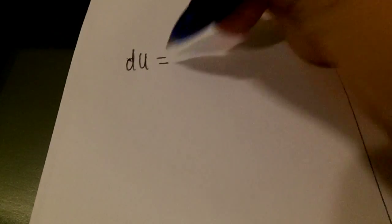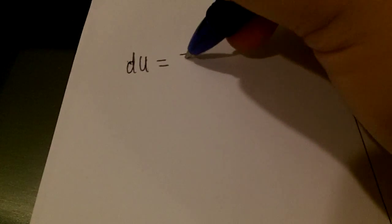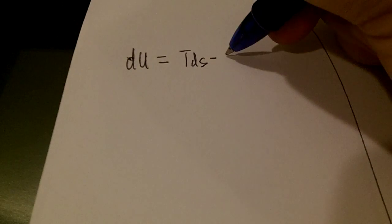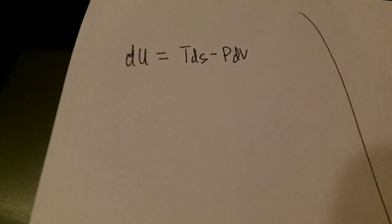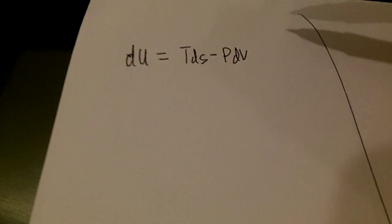Hi and welcome. Today I just want to share a little more about these Maxwell relations and how to derive them. First, you should already know that dU, internal energy, equals TdS minus PdV. This is actually derived from our first law of thermodynamics.